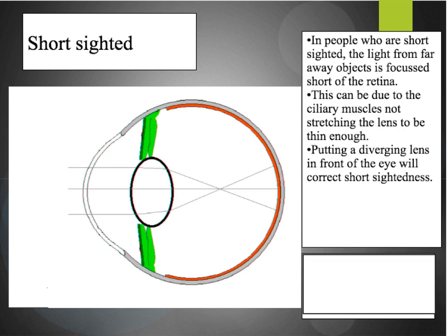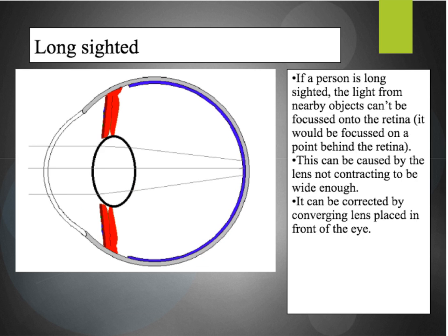In order to combat short-sightedness, a diverging lens can be placed in front of the eye, which will correct it. The focal point will then be moved towards the back of the eye as the light rays are spread out before hitting the lens. In people with long-sightedness, this occurs in a slightly different way. If a person has long-sightedness, the light from nearby images can no longer be focused onto the retina — in fact, it would end up being focused behind the retina.